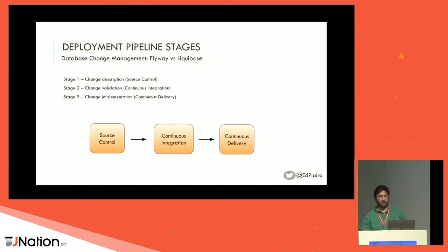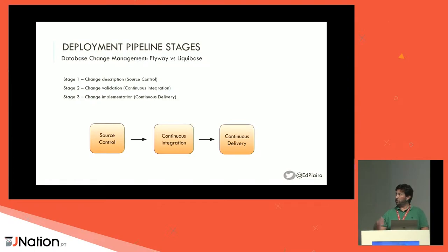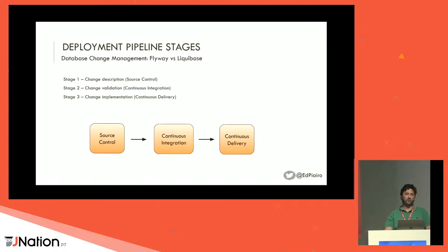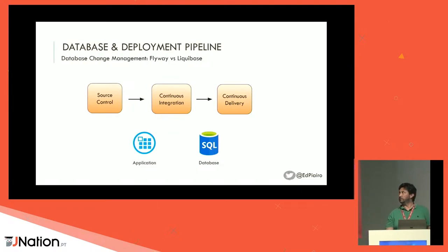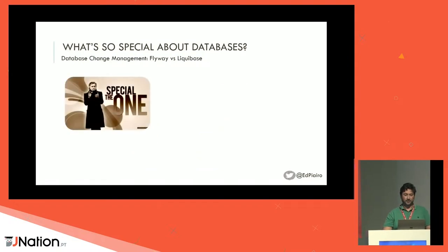This is my simplest vision regarding the pipeline stages. Stage one is source control — how we describe the change. Stage two is where we validate the change and gain enough confidence to promote that change to a target environment. Stage three is to deploy that change on that target environment. Most of this is at the application level — it's the standard. But what about the database? Is it as straightforward as we think it should be?